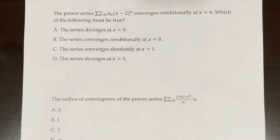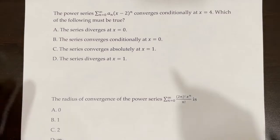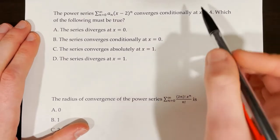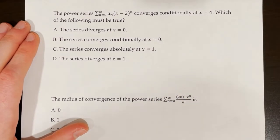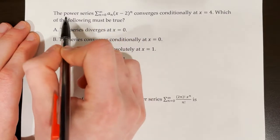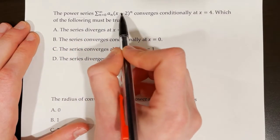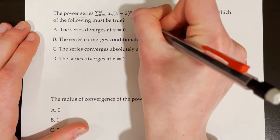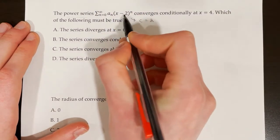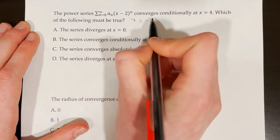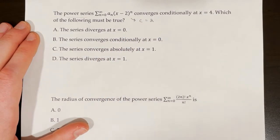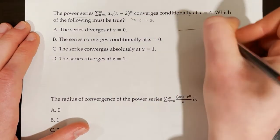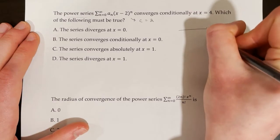The power series from n equals 1 to infinity of a sub n times x minus 2 to the power of n converges conditionally at x equals 4. A few things to note: since I have an x minus 2 to the power of n, my center is c equals 2 because when we have x minus c, whatever value is plugged in for c is our center. That's also the center of our interval of convergence, centered at x equals 2.